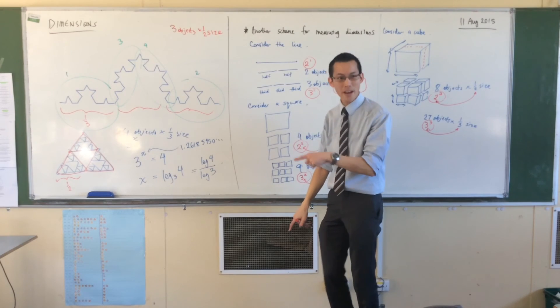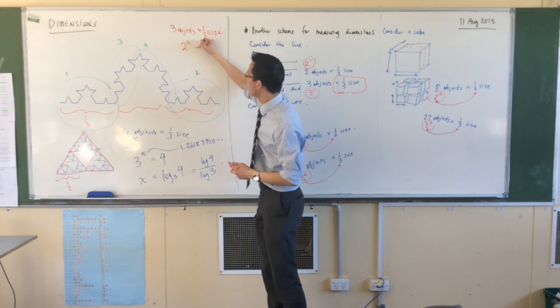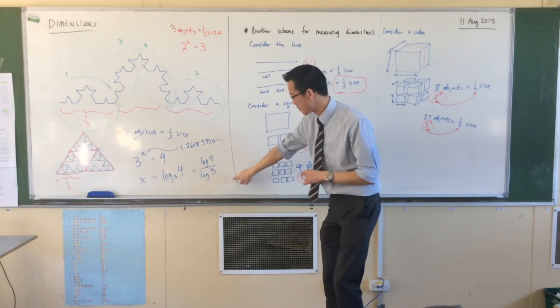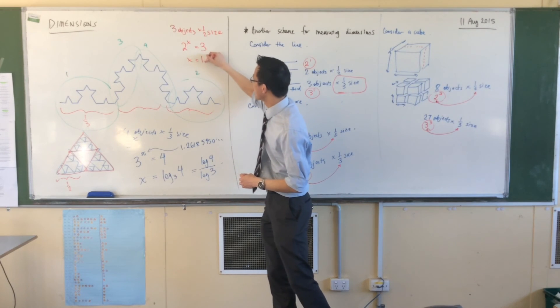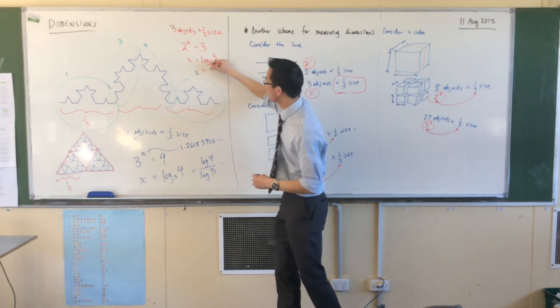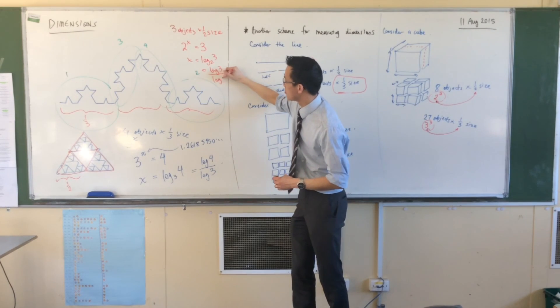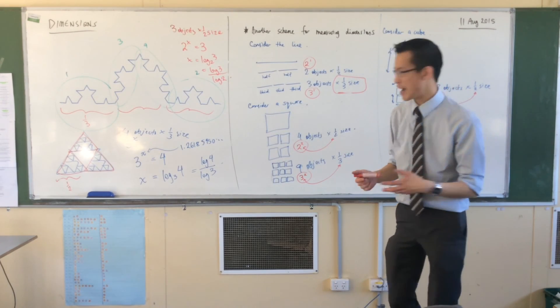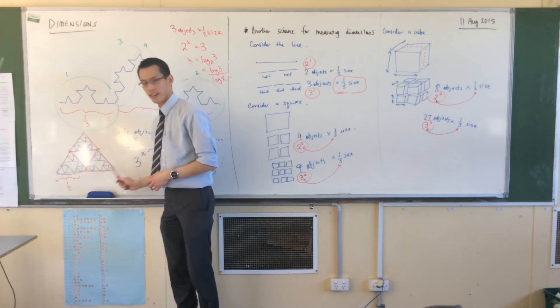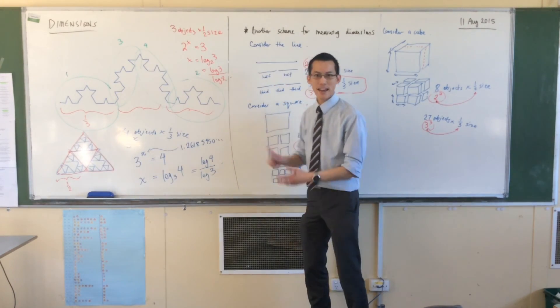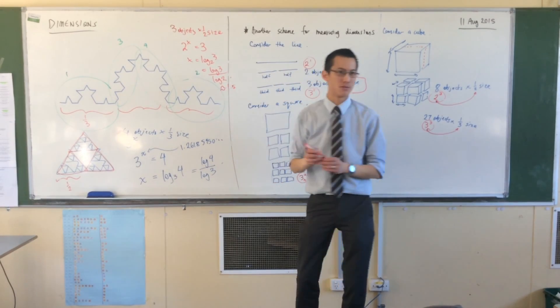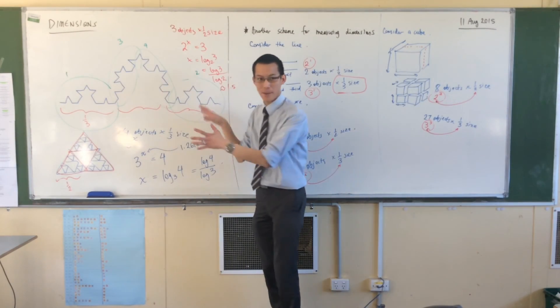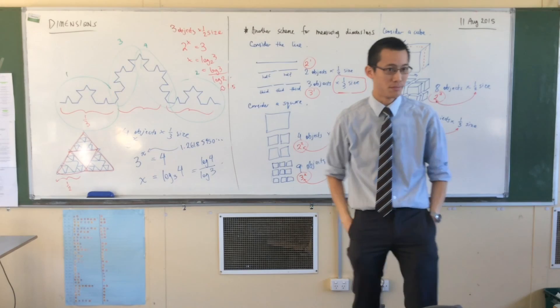Now, going through this same process, what I want is two to the power of some number should give me three. Now, going back through, even if you don't fully understand what's happening here, the way you get X is you say it's log base two of three, which in your calculator is log three divided by log two. What is this number? 1.5-ish. Again, it looks kind of like a two-dimensional object, but it's not really. It's like a one-and-a-half dimensional object. So, when we have a look at dimensions, what you're now breaking apart is this idea of fractal dimensions.